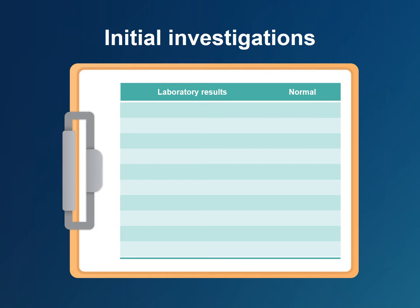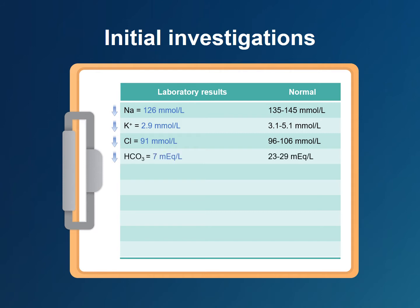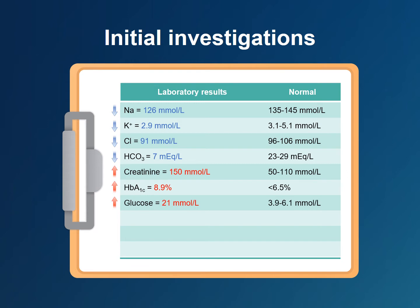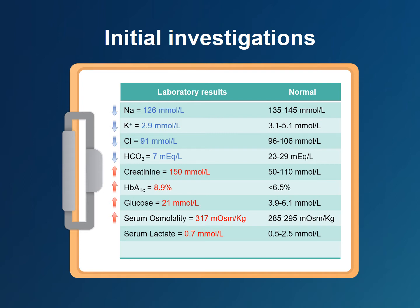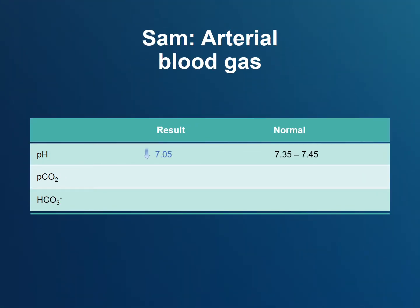Initial investigations: Sam is hyponatremic with a sodium of 126 millimoles per liter. He is hypokalemic with a potassium of 2.9 millimoles per liter. His serum bicarbonate level is low and his serum creatinine is elevated. His hemoglobin A1c, a marker of average blood sugar over the past 3 months, is high at 8.9%. He has a high venous glucose of 21 millimoles per liter, confirming severe hyperglycemia. His serum osmolality is high, but serum lactate is normal. And finally, serum ketones are positive. Arterial blood gas reveals a low pH of 7.05, low partial pressure of carbon dioxide, and a low bicarbonate level.